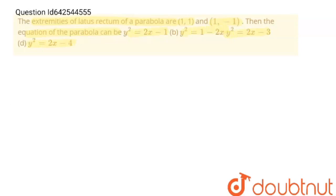So let's solve this problem. See, this is our one latus rectum, whose coordinates are (1,1), one end of latus rectum, and this is the other end. Let me name it as L1 and L2, and this is (1,-1).